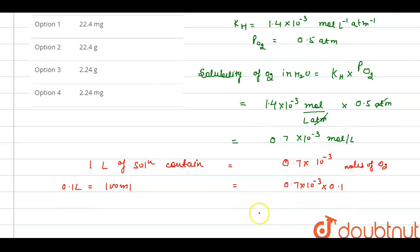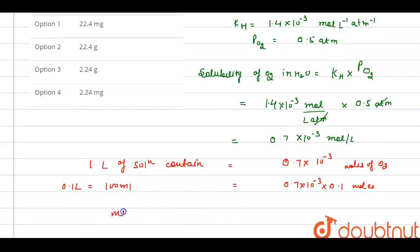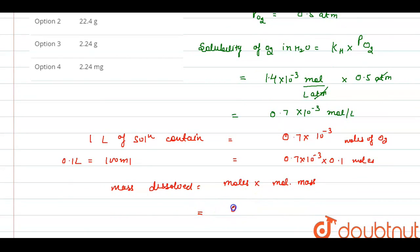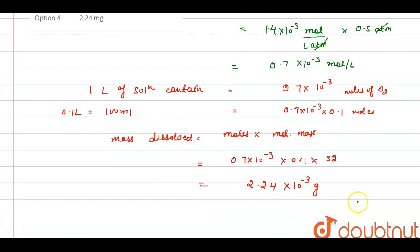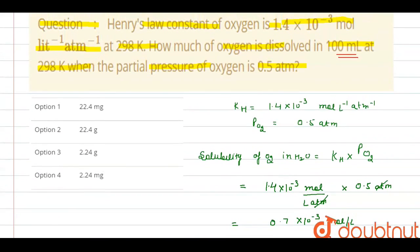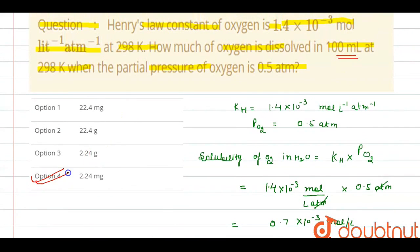So this gives us 0.7 × 10⁻³ × 0.1 moles of oxygen. Now we have to find out the mass dissolved. Mass dissolved equals moles × molecular mass of oxygen. Moles are 0.7 × 10⁻³ × 0.1 and molecular mass of oxygen is 32. When we solve this, it comes out to be 2.24 × 10⁻³ grams. Converting to milligrams, it will be 2.24 milligrams. So option number 4 is the correct answer.